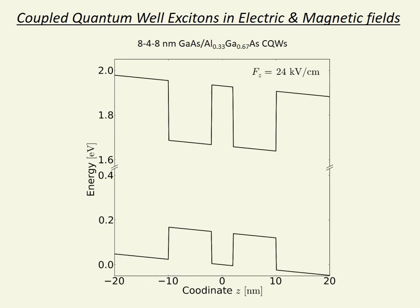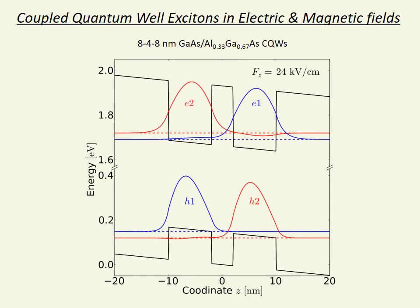We focus on a particular example of gallium arsenide-coupled quantum wells under external bias as shown here. Optically excited electron and hole states are confined to the quantum wells. Here we show the wave functions of the first two electron and hole states neglecting any Coulomb interaction.